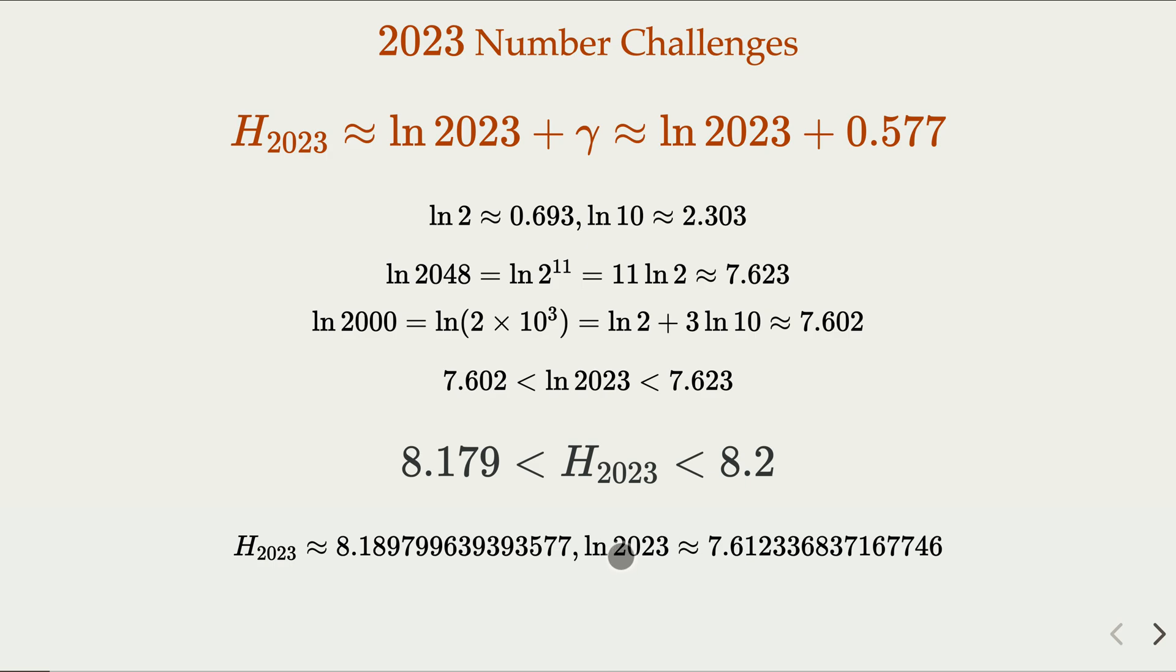And here, again, the calculator gives 2023. The natural log is about 7.6123. And here we have 7.6. A really good approximation I would say.